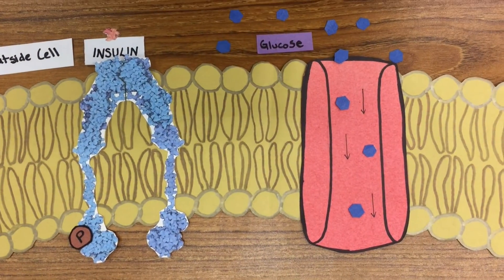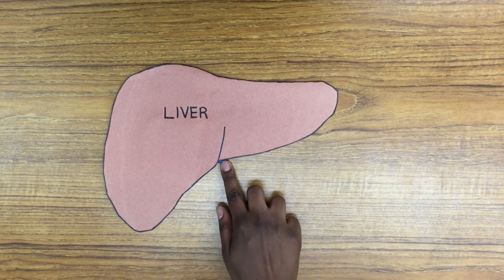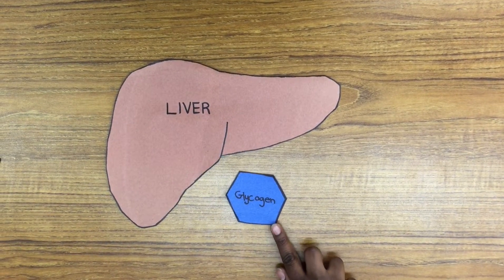The glucagon signaling pathway starts with the liver, where glucose is stored in the form of the polysaccharide glycogen.